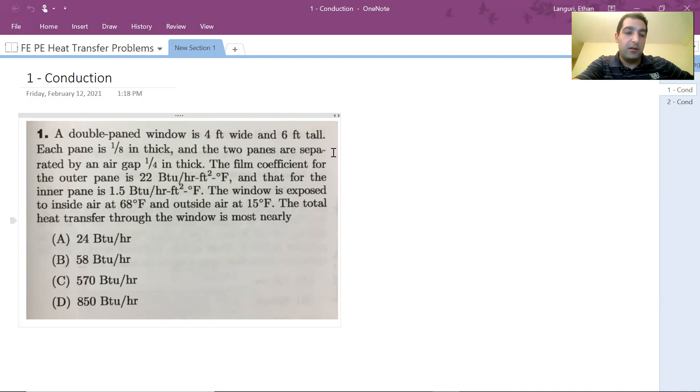So the question here is to find the total heat loss through this double-pane window. We are dealing with conduction through multiple layers, which we typically call a composite wall. As you can see, this is not an SI unit problem; this is a U.S. customary system problem. Let's go through this together. This is a composite wall conduction problem.